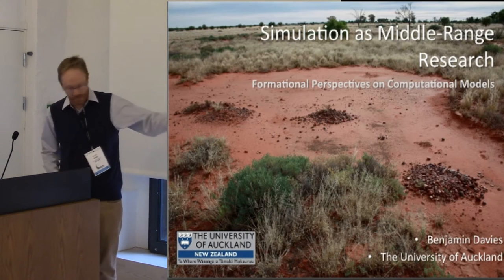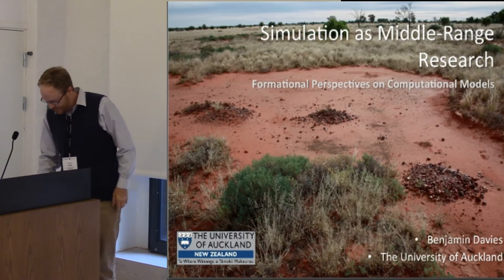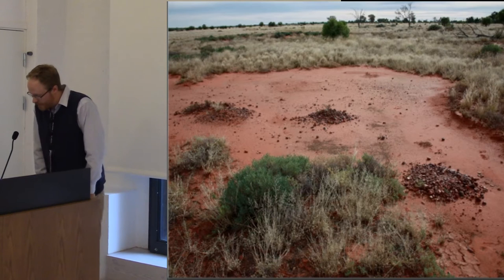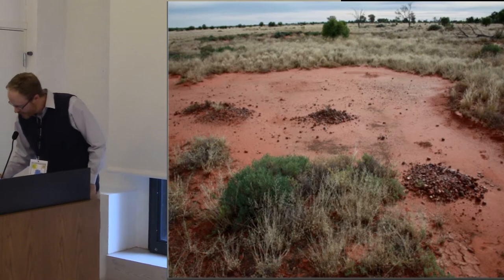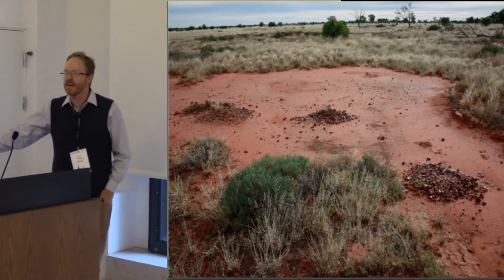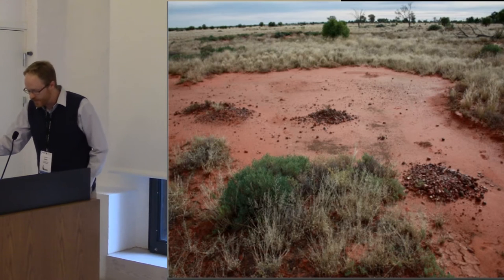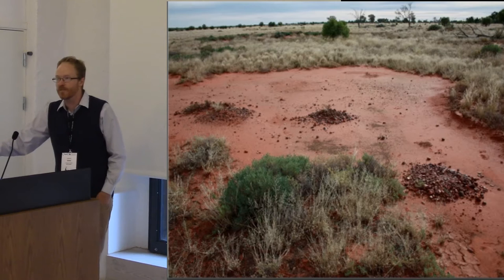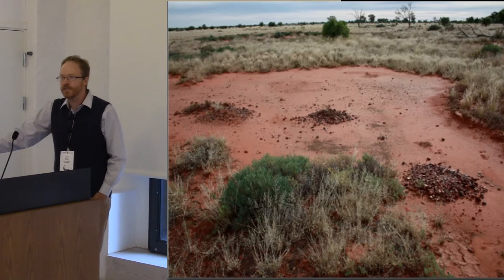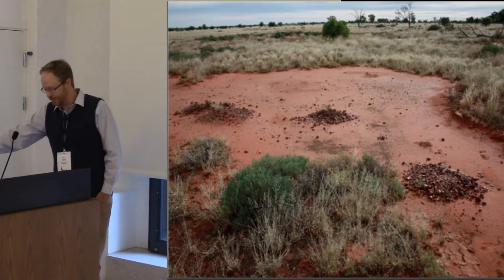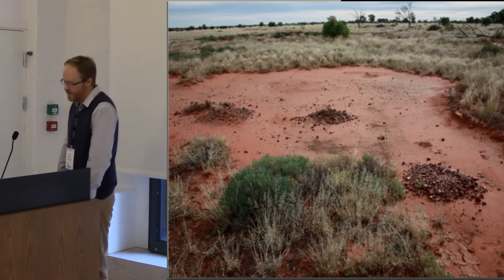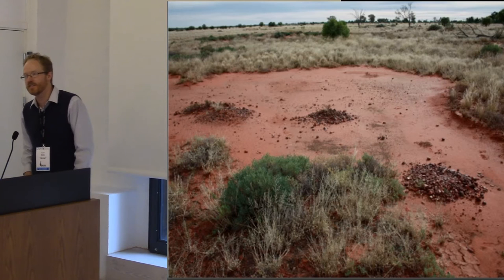Where I work we often find these — clusters of heat retainer hearths and lithic artifacts lying together on the surface. These are ubiquitous in the landscape, partly a consequence of an erosion-prone geomorphic setting. When they're recorded, they're often interpreted as campsites. As the archaeologist, how do I go from hearths and stone artifacts to campsites?